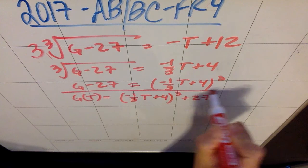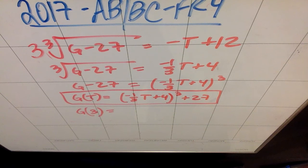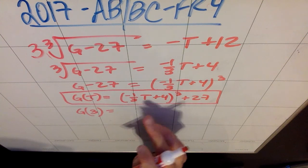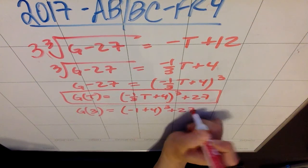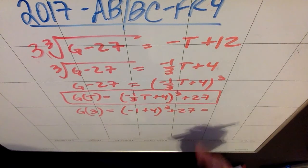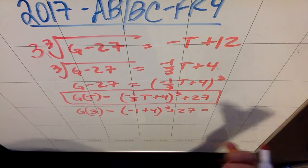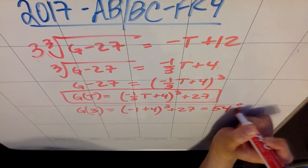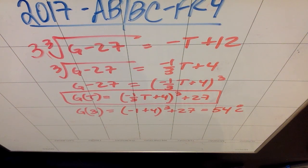But I was also asked for G of 3. And that's going to be plugging in 3 for my t, and I get negative 1 plus 4 quantity cubed plus 27. Which should be, it was negative 1 because it was negative 1/3 times 3. So I should get 3 cubed plus 27, which is 27 plus 27, or 54 degrees Celsius. And that is my approximation for the temperature. And that's the boiled potato problem that had everybody stressing in 2017.